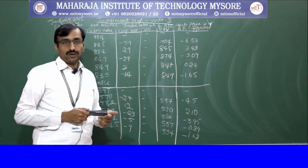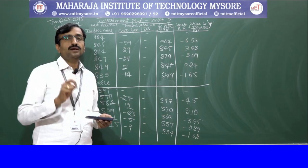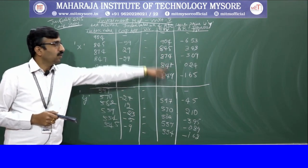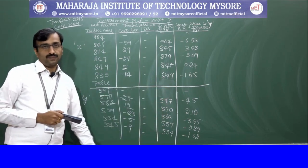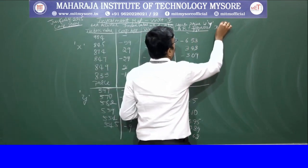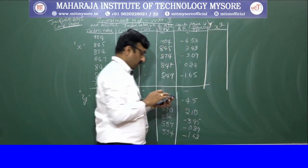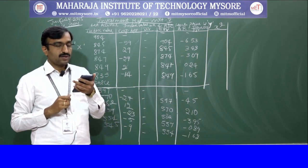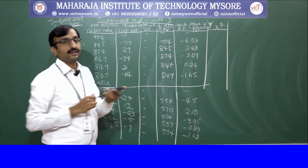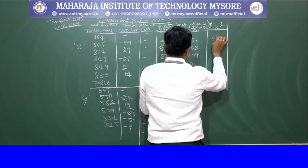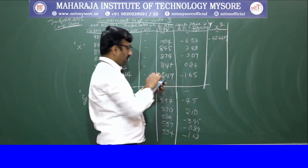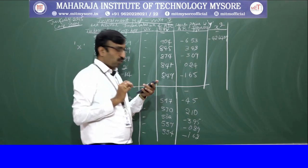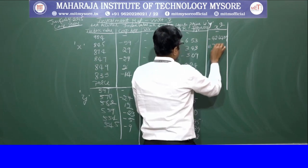Next, we need to compute X², XY columns. For X²: minus 6.53 squared = 42.6409; 3.43 squared = 11.7649; minus 3.09 squared = 9.5481; 0.24 squared = 0.0576; minus 1.65 squared = 2.7225.